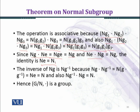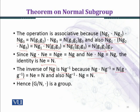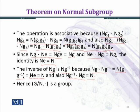Now we are left with the existence of the inverse. The inverse of NG is NG⁻¹, because NG · NG⁻¹ = N(GG⁻¹) by using the definition of multiplication of right cosets. Since G is a group and G belongs to G, its inverse also belongs to G, and GG⁻¹ equals the identity element E. So we obtain NE, which equals N. Similarly, we can prove that NG⁻¹ · NG = N. Hence, G over N under the given binary operation of multiplication of right cosets is a group.